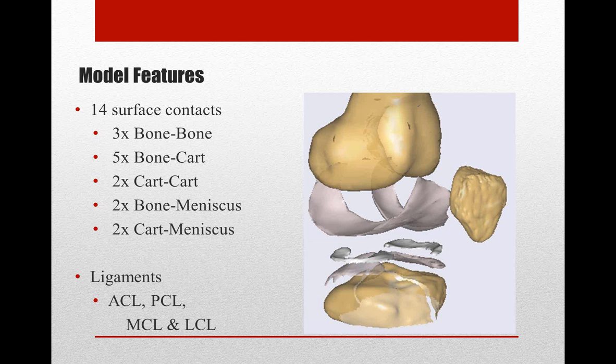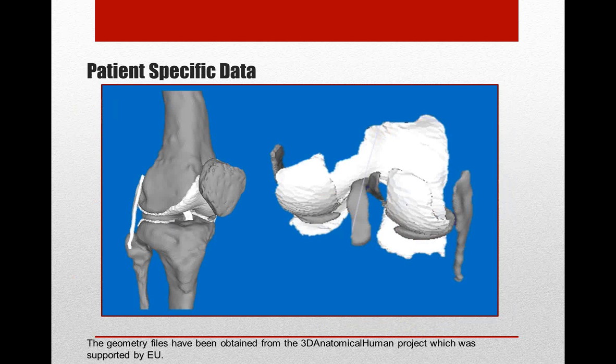Additionally, ligaments were introduced to the model. ACL, PCL, and medial and lateral collateral ligaments were added. ACL and PCL were each represented as one non-linear ligament, as described in several previous publications. Medial and lateral collateral ligaments were represented as a string of three non-linear ligaments each. Attachment points were taken from the MRI data available from the subject.